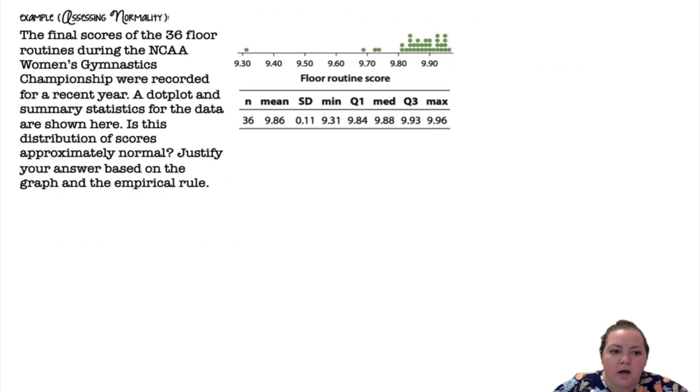All righty. The final scores of the 36 floor routines during the NCAA Women's Gymnastics Championship were recorded for a recent year. A dot plot and summary statistics for the data are shown here. Is this distribution of scores approximately normal? Justify your answer based on the graph and the empirical rule.